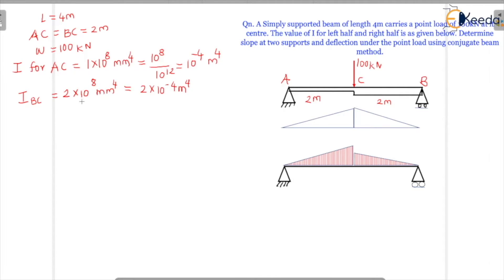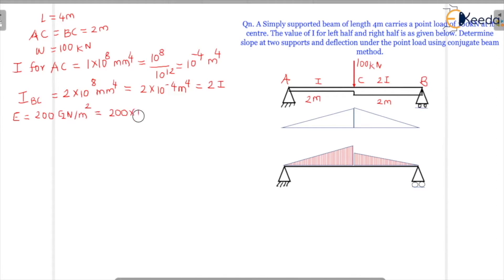This is the key difference — the left half is I and the right half is 2I, which is why the shape of the beam changes. E is given as 200 GN/m², which is 10⁹ N/m², and we can convert it to 200 × 10⁶ kN/m².